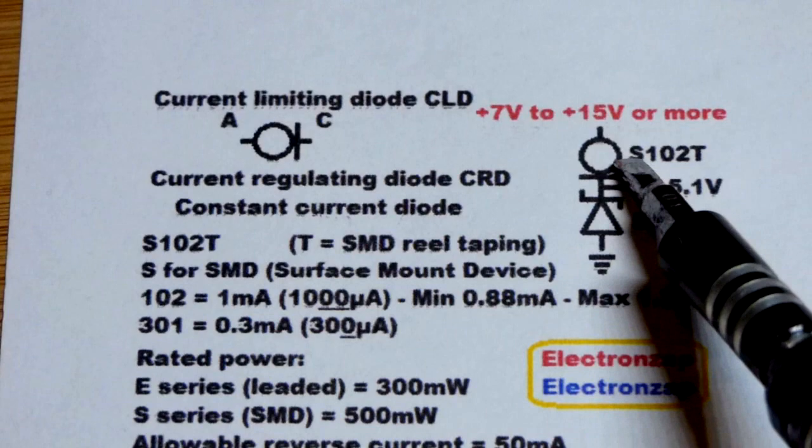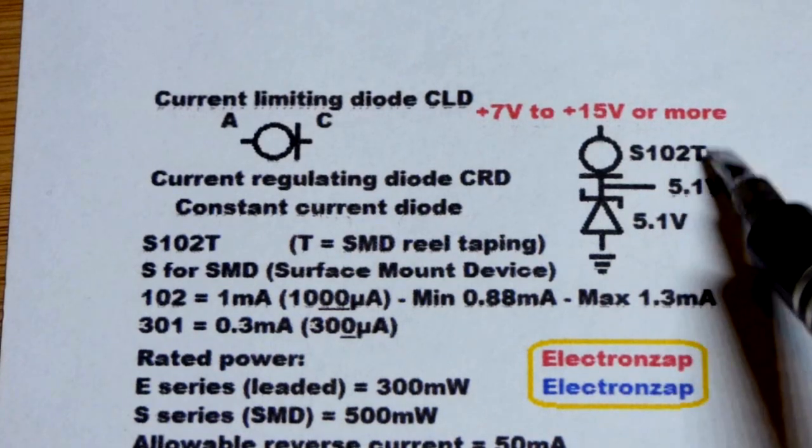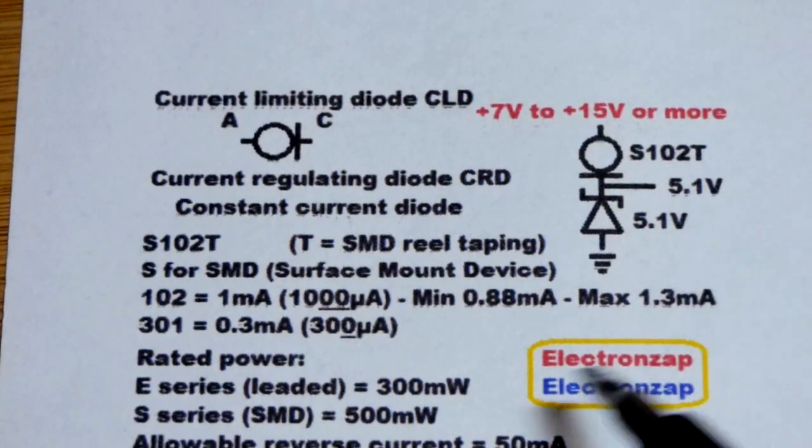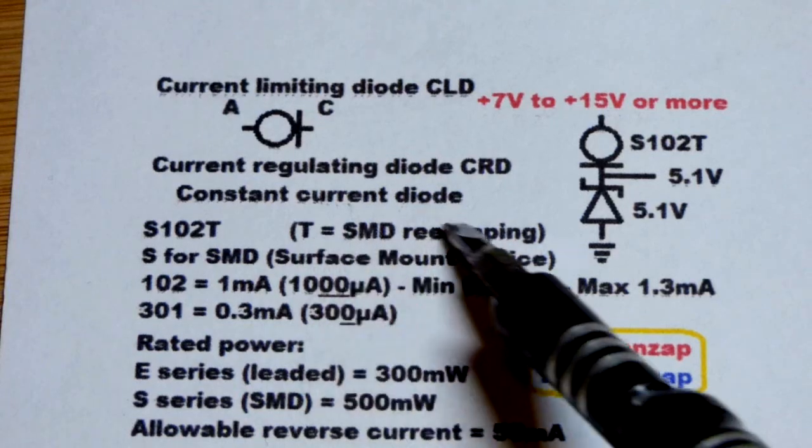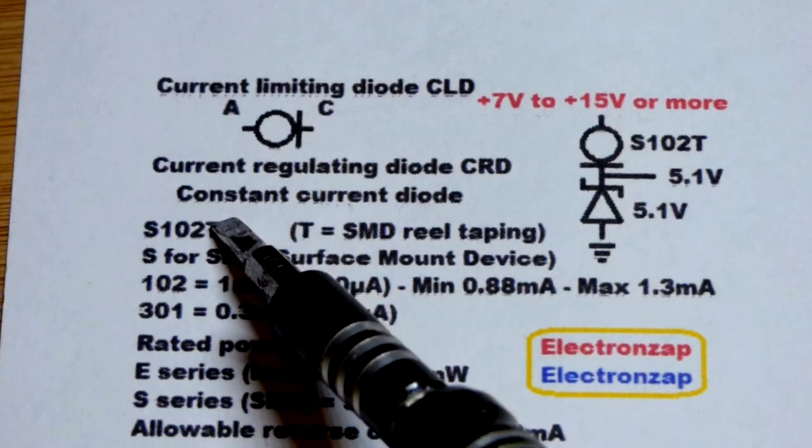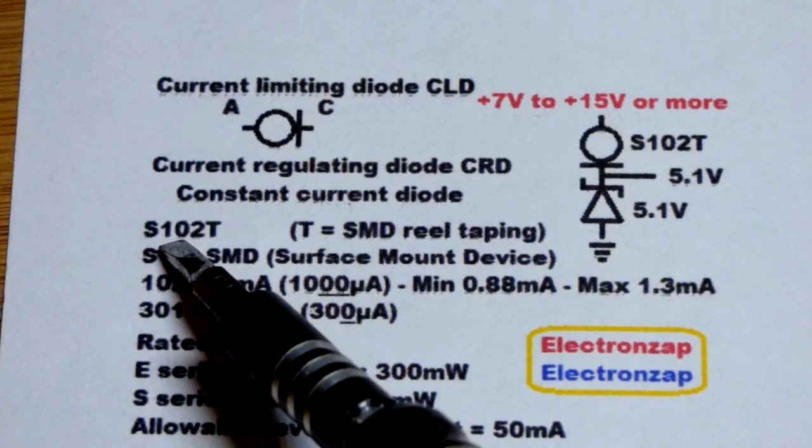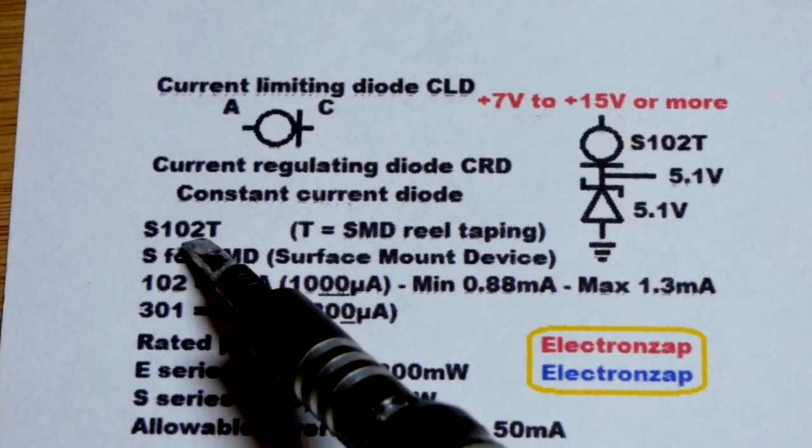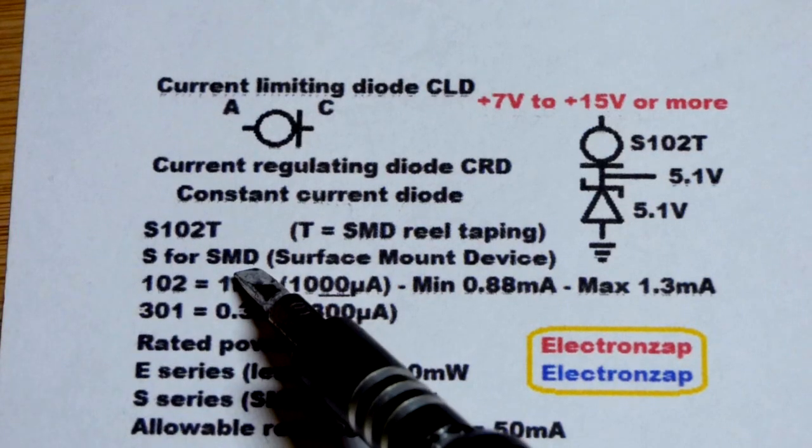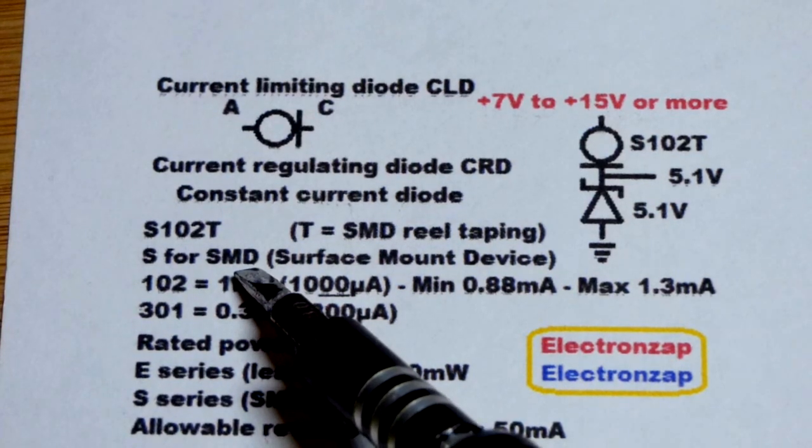So this is the S102 that I showed you in the video, and T, the T is how it comes packaged. So that's not really part of the numbers, just letting you know how it comes packaged if you buy them new. And so the S102, so S is for surface mount. As I showed before, it was attached directly to the board.